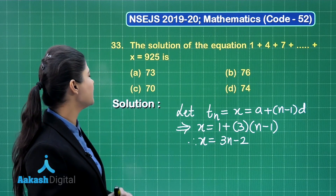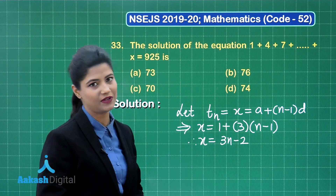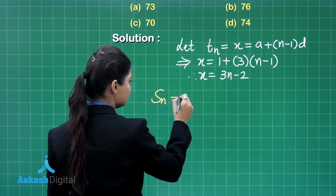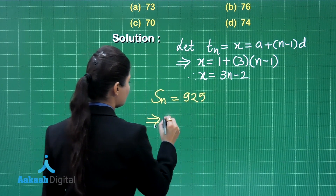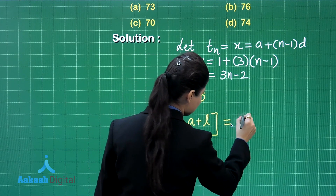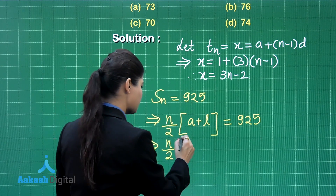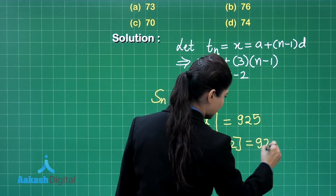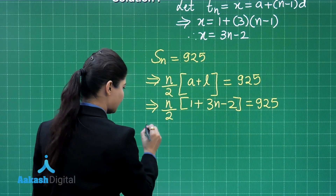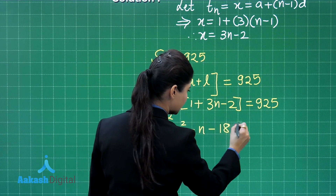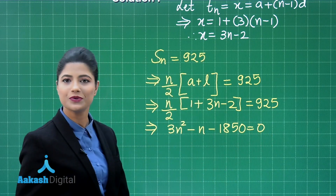The right hand side, 925, represents the sum of n terms of the AP. Applying the sum formula, Sn equals n upon 2 into (first term plus last term), we get n upon 2 into (1 plus 3n minus 2) equal to 925. Simplifying this equation generates a quadratic: 3n squared minus n minus 1850 equal to 0.